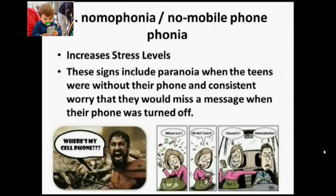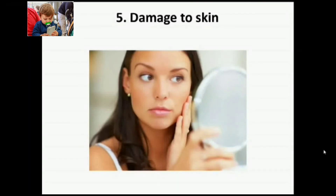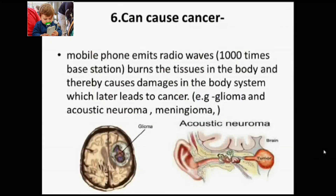The next disease caused by mobile radiation is damage to the skin. The next, and very harmful, disease is cancer. Mobile phones emit radio waves up to one thousand times more than base stations, which burns the tissues in the body and causes damage to the body system, later leading to cancer — specifically glioma and acoustic neuroma.